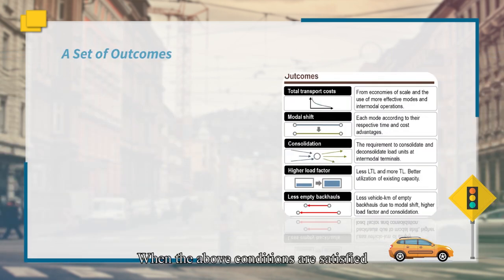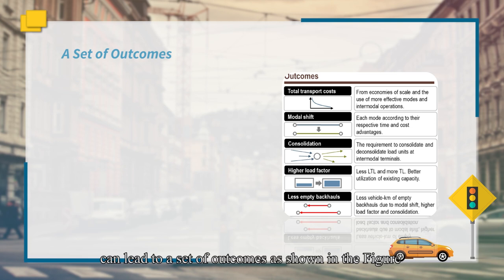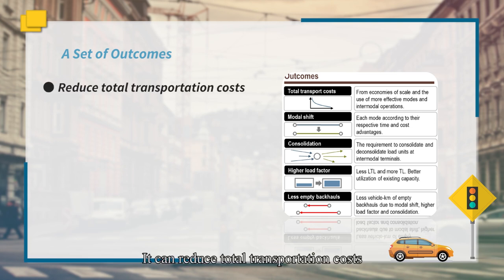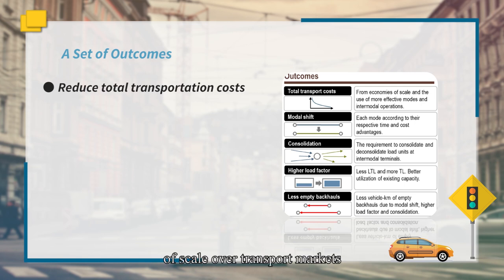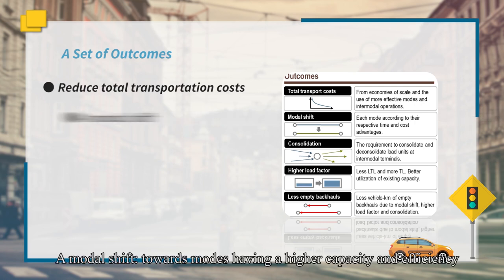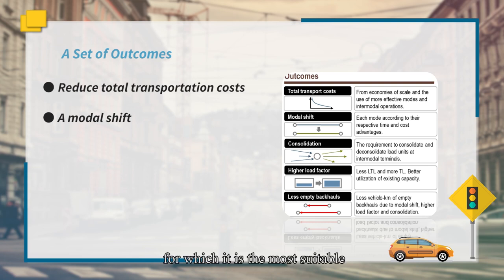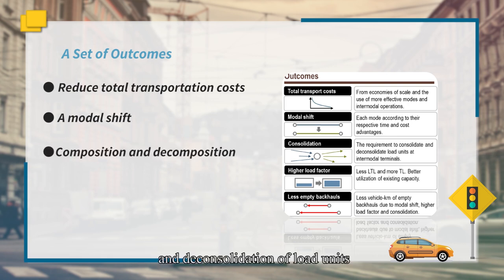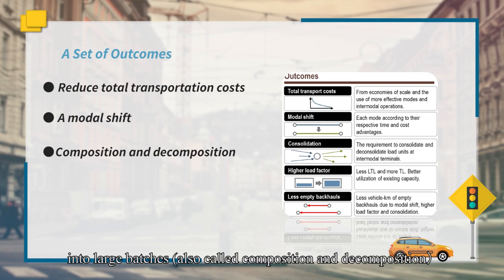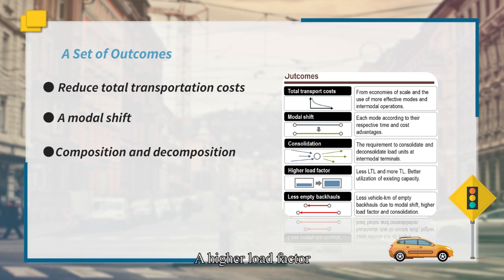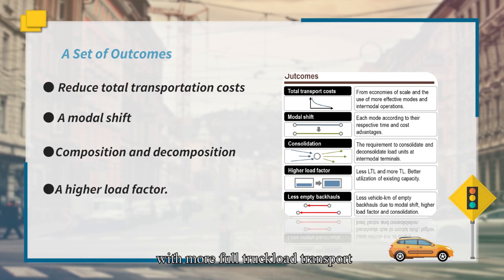When the above conditions are satisfied, the application of intermodal transport can lead to a set of outcomes as shown in the figure. It can reduce total transportation costs, mostly because of the benefits of economies of scale over the transport market. There is a modal shift towards modes having higher capacity and efficiency — each mode tends to be used for the conditions for which it is most suitable. Intermodalism requires the consolidation and deconsolidation of load units into large batches, achieving a high load factor with more full truckload transport as well as a high level of asset utilization.